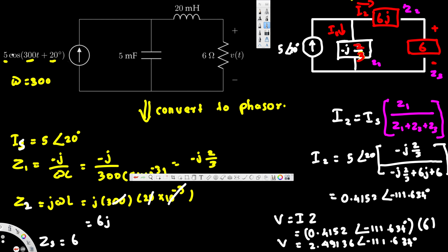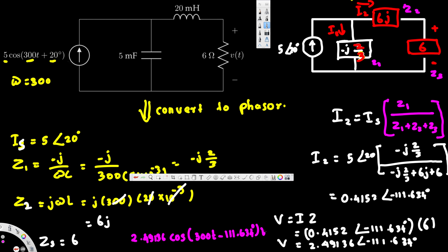To convert this back into the time domain, the amplitude 2.49136 becomes the front value, then we write cosine of 300t, and append the angle −111.634 degrees. So the voltage across the 6 ohm resistor is v(t) = 2.49136·cos(300t − 111.634°). That's how we solve this kind of problem — I hope this helps, thanks for watching.